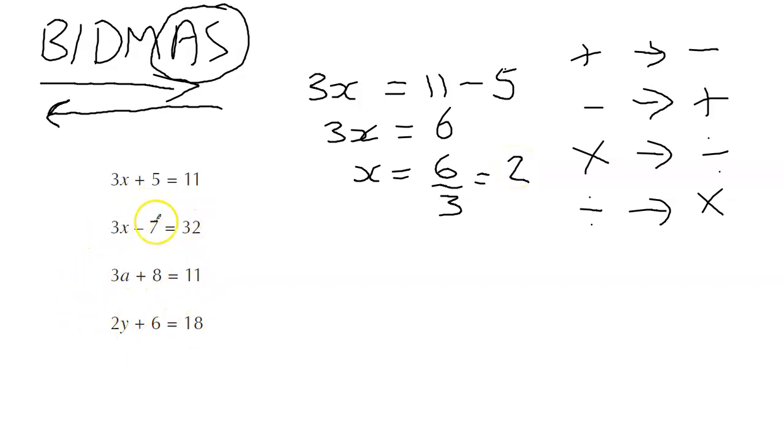All of these are pretty much the same because they're something times the x and then plus or minus a number. So we can kind of get into a little routine of them. We're going to get rid of the number first by adding this time. Because it's take away, the opposite of take away is to add. So we're going to get 3x equals 32 plus 7, which is 39. And that means that x equals 39 divided by 3, which gives us 13.